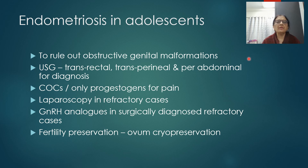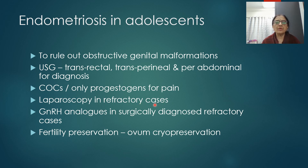In adolescents presenting with endometriosis, obstructive genital malformations must be ruled out. Ultrasonography may be transrectal, transperineal, or transabdominal since transvaginal may not be feasible. COCs or progestogen-only treatment can be given for severe pain. Laparoscopy is reserved for refractory cases not responding to medical management. GnRH analogues can be used in surgically diagnosed refractory cases after discussing options and side effects. Fertility preservation through oocyte cryopreservation should be discussed with the patient.